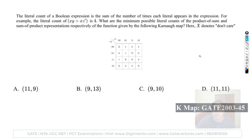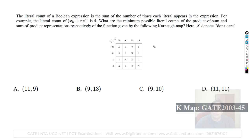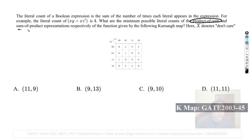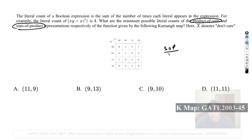Next question defines literal count as the sum of the number of times each literal appears in an expression — for example, a given expression has four literals. The question asks for the minimum literal count in both the POS and SOP representations of a function given by a K-map, where X denotes don't care.